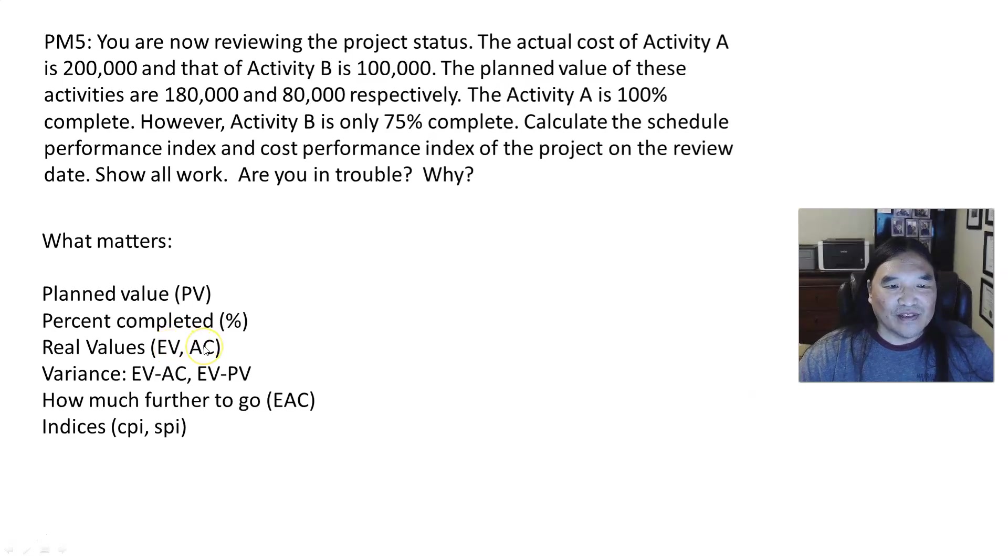So my earned value divided by my actual costs. We have variance, meaning how much does this deviate from my original plan? How much further do I have to go? Or basically, how much have I earned up to this point? And then we have indices, CPI and SPI. One is for cost, one is for time. And so what I'm concerned about is, am I doing good or am I doing bad? And this is pretty simplistic. If I'm below one, I'm doing bad. If I'm above one, I'm doing good. And so that tells me everything I need to know.